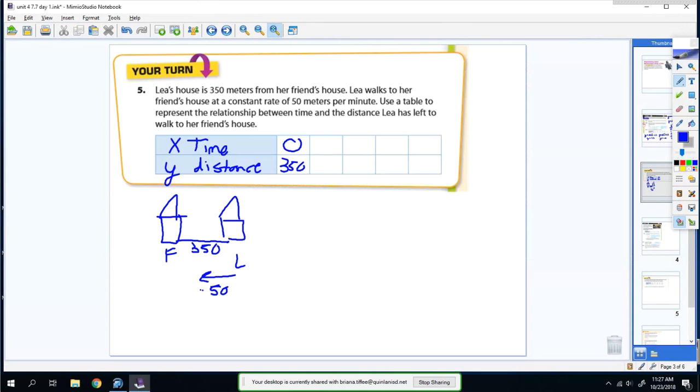So in one minute it'll be 300 meters left. My equation would be y = -50x + 350, because every time she walks a minute, she takes away 50 meters.